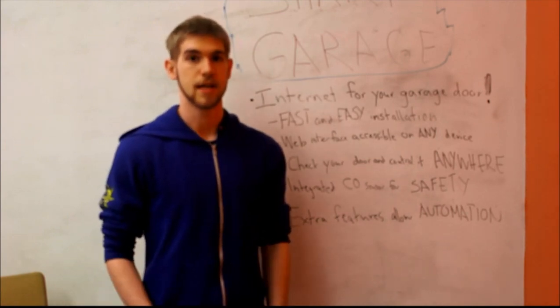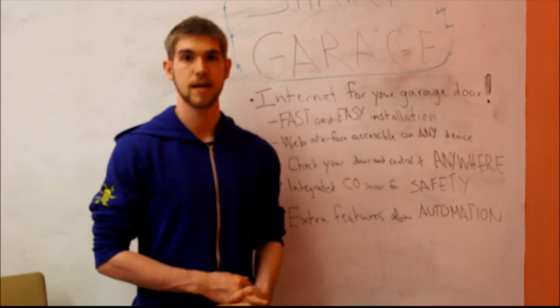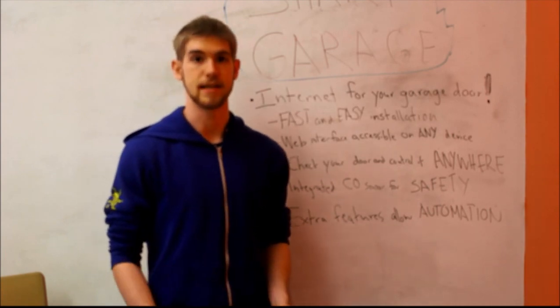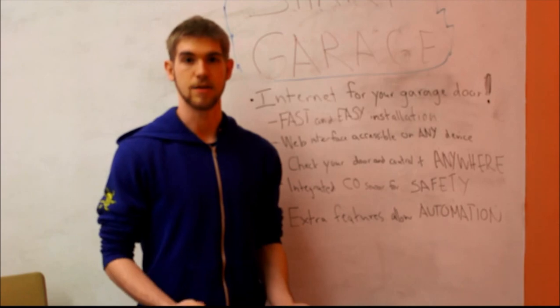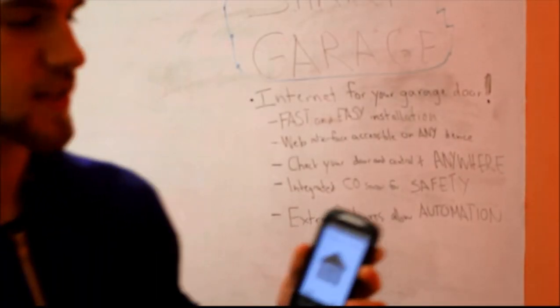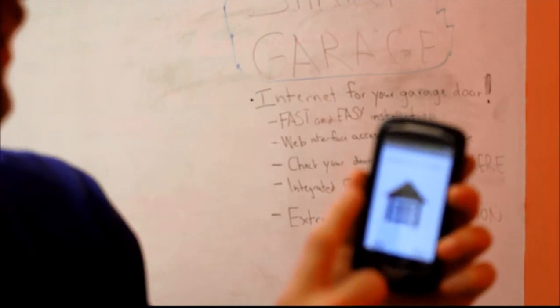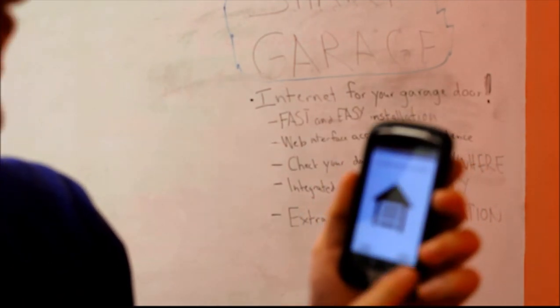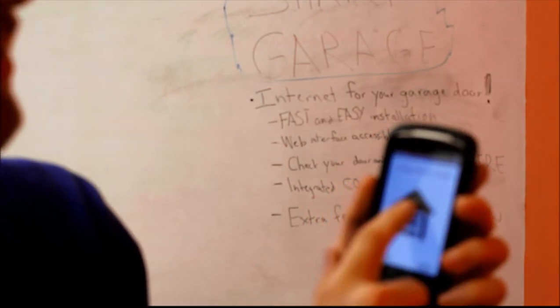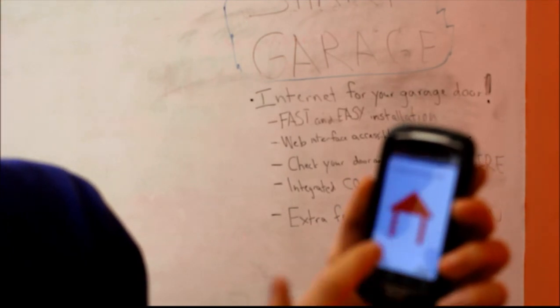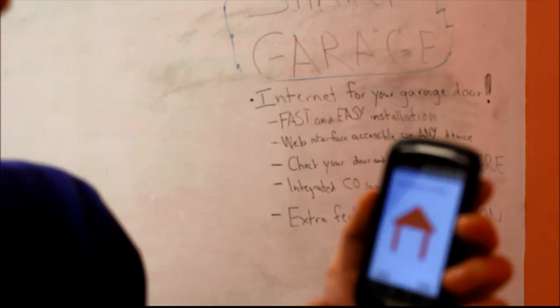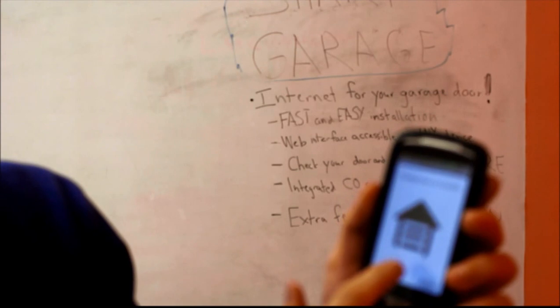Once that's done, you can log in to our website with your device ID and the PIN that you'll be given. And you can control the garage door from anywhere. The interface is very straightforward. It tells you the status of your door, whether it is open or closed. And you simply click on it to change the state of the door. Now the door is open. Now it is closed.